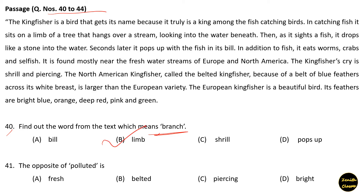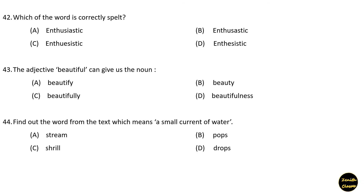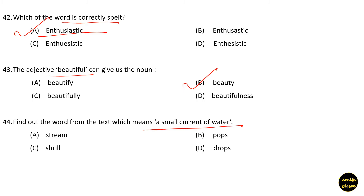Next question: The opposite of 'polluted' is 'fresh' — option A. Next question: Which word is correctly spelt? Option A is the correct answer: 'enthusiastic,' which means full of excitement and interest in something. Next question: The adjective 'beautiful' gives us the noun 'beauty' — option B. Next question: Find the word from the text which means 'a small current of water' — it will be 'stream,' option A.